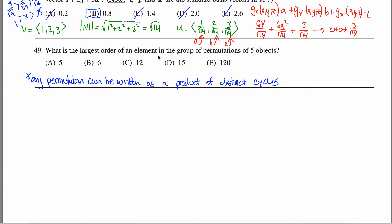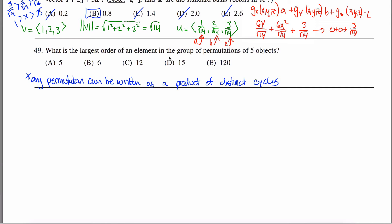What is the largest order of an element in the group of permutations of five objects? This is commonly referred to as the symmetric group S5. Any permutation can always be written as a product of distinct cycles — that's an important fact.